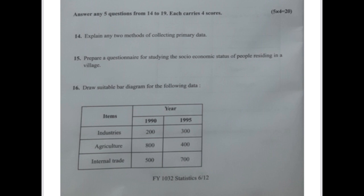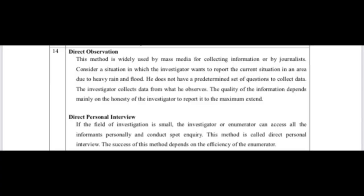The first method is the direct observation method. This method is widely used by mass media and journalists for collecting information. Consider a situation where the investigator wants to report the current situation in an area due to heavy rain and flood. He does not have a predetermined set of questions; he collects data from what he observed. The quality of information depends mainly on the honesty of the investigator.